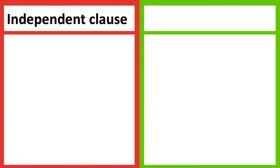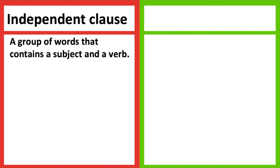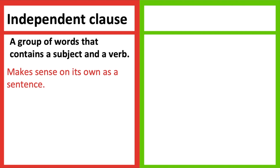An independent clause is a group of words that contains a subject and a verb. This type of clause makes sense on its own as a sentence. For example, Jane ate pasta. The subject in this sentence is Jane and the verb is ate.